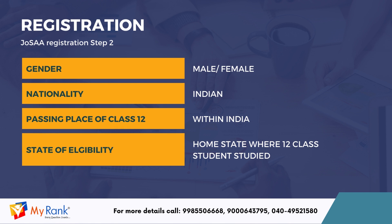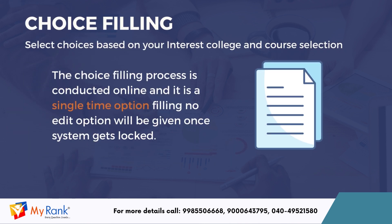In registration step 2, you need to verify your details like gender, nationality, passing place of class 12, state of eligibility, and complete the registration process. After registration, students have to fill out their choices for colleges and courses. The choice filling process is conducted online and it is a single-time option filling. No edit option will be given once the system gets locked. A candidate needs to be very careful while filling the choices. Select the institutes and programs you want to apply for, rank your choices in order of preference, and submit your choices.